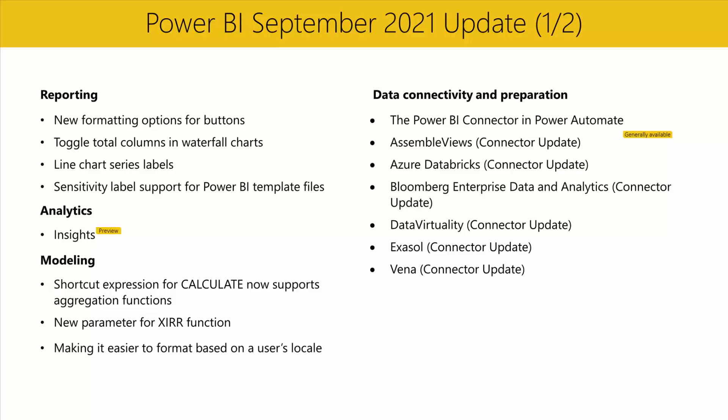We have exciting new updates in the modeling section. First, we've made it easier to write filters for the CALCULATE and CALCULATETABLE functions. You can now use aggregation functions in the filters when they are used in Boolean expressions. The newly supported syntaxes improve the readability of the DAX expressions but don't impact performance compared to their more verbose equivalent expressions. We've also added a new parameter to the XIRR function for situations where it is unable to find a solution and returns an error, enabling you to specify an alternate result instead.